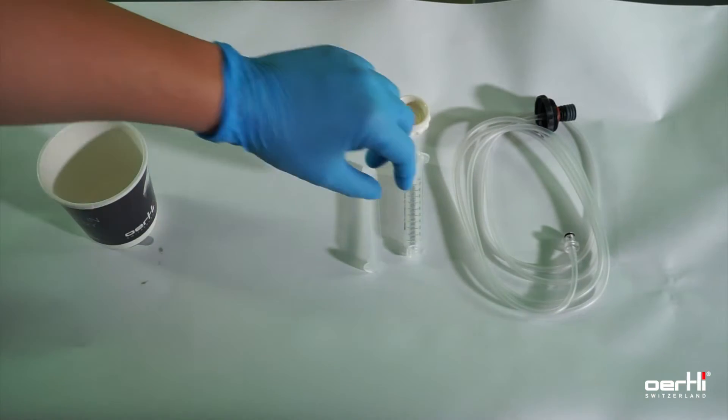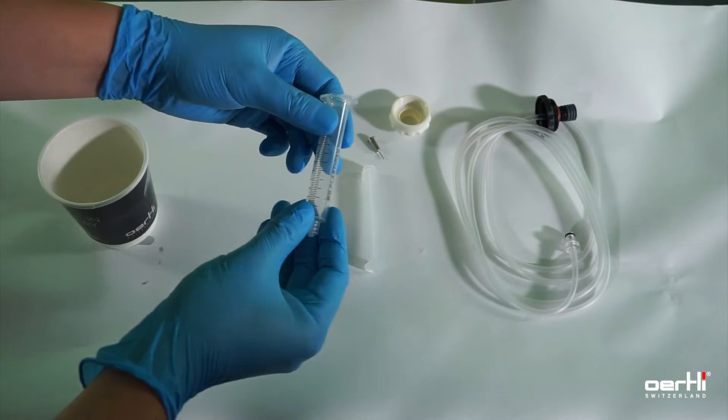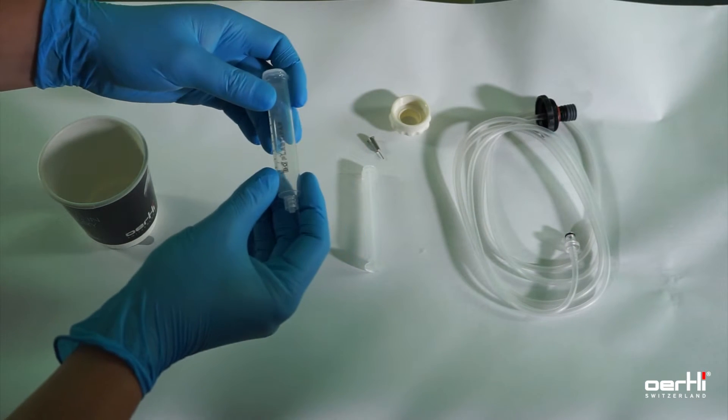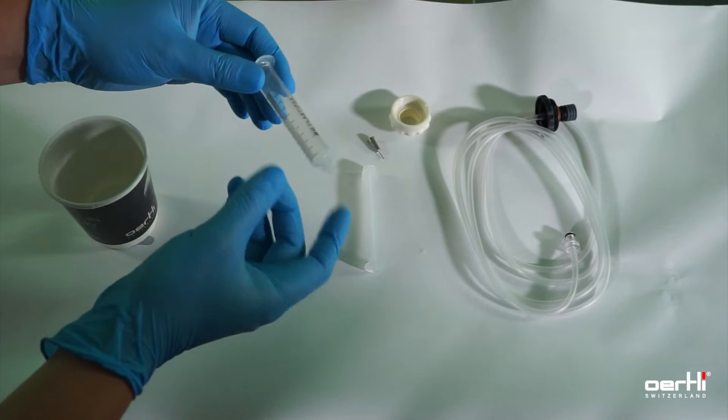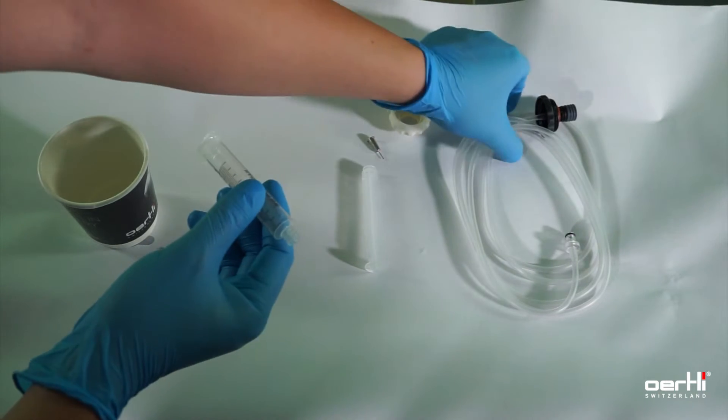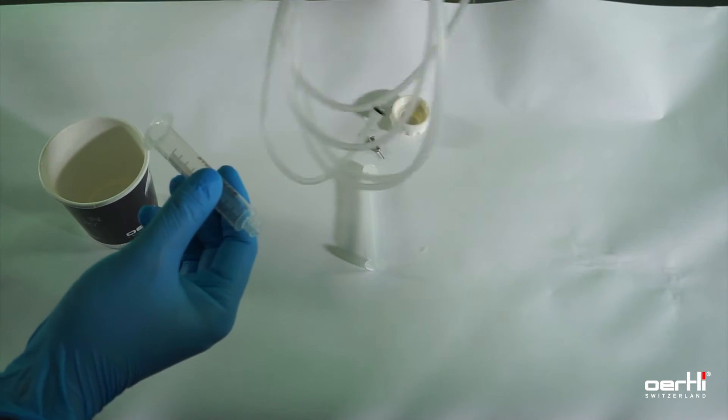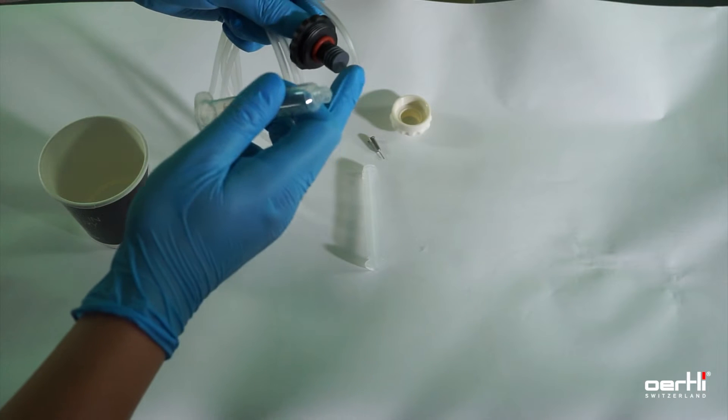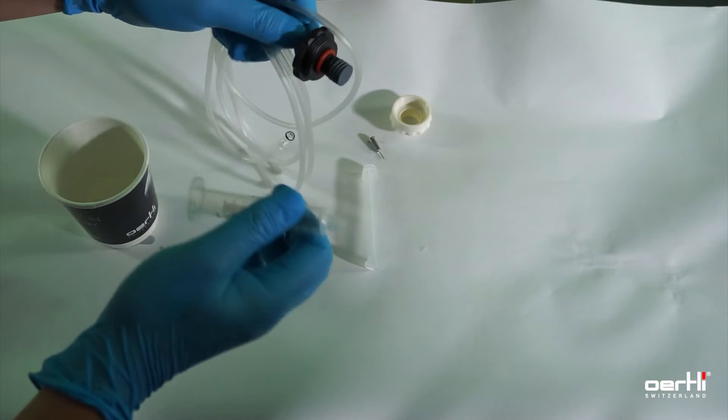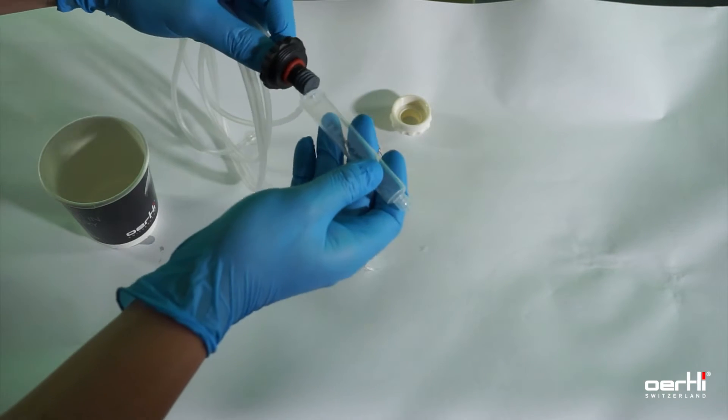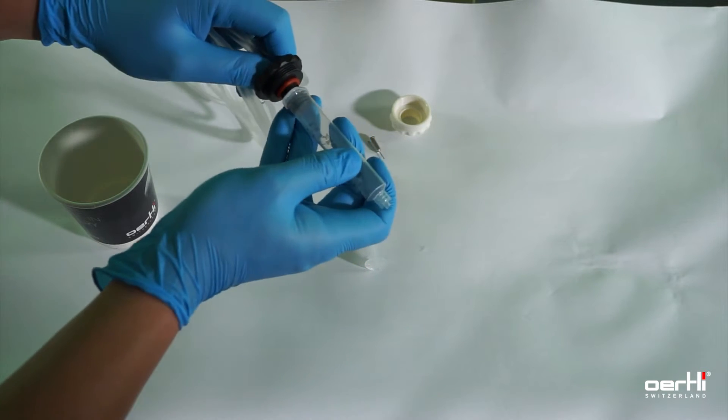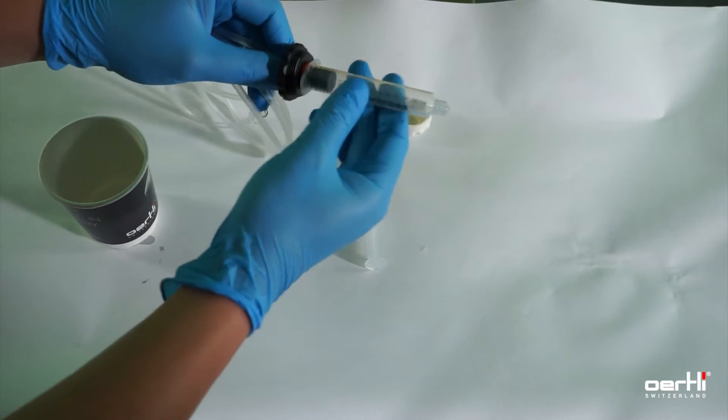When working with the original syringe, follow the instructions as showing now. Grab the syringe, grab the syringe adapter black containing the plunger stopper, and assemble both parts.